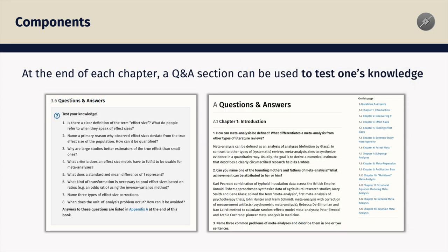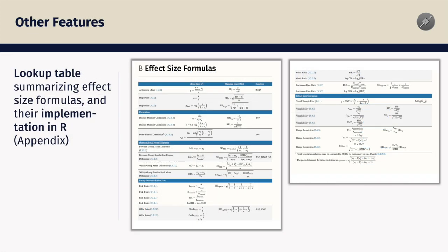At the end of each chapter, we also provide a set of questions which can be used to test one's knowledge. Answers are provided at the end of the book in the appendix. There, you can also find a lookup table which displays formulas for common effect sizes and their standard errors, as well as functions in R which can do these calculations for us.